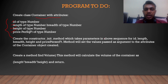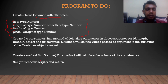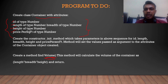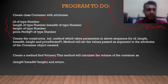So create the constructor init method which takes parameters in the above sequence — breadth, height, and price per square feet. All these parameters will be in the init method, which will set the value of the passed arguments to the attributes of the container. Then we have to create another method, findVolume. This method will calculate the volume of the container — length times breadth times height — and return the volume.